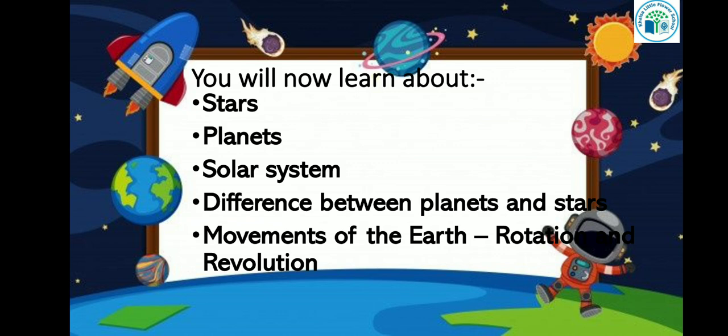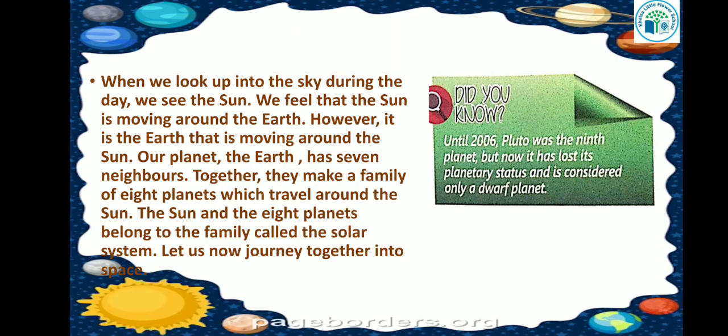Kids, when we look up into the sky during the day, we see the sun. We feel that the sun is moving around the earth. However, it is the earth that is moving around the sun. The sun is not moving around the earth — it is the earth that is moving around the sun.